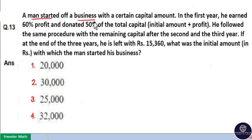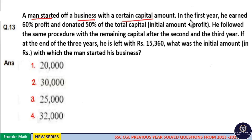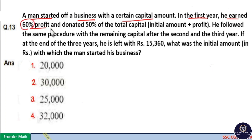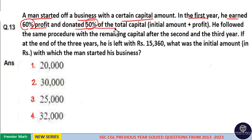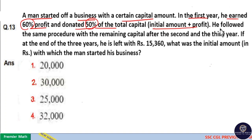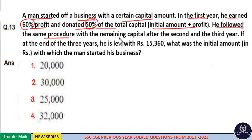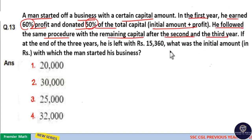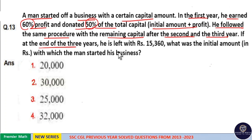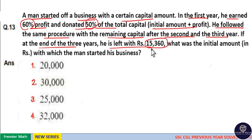A man started a business with a certain capital amount. In the first year, he earned 60% profit and donated 50% of the total capital, including the initial amount plus profit. He followed the same procedure with the remaining capital after the second and third year. If at the end of 3 years he is left with Rs. 15,360, what was the initial amount with which the man started his business?